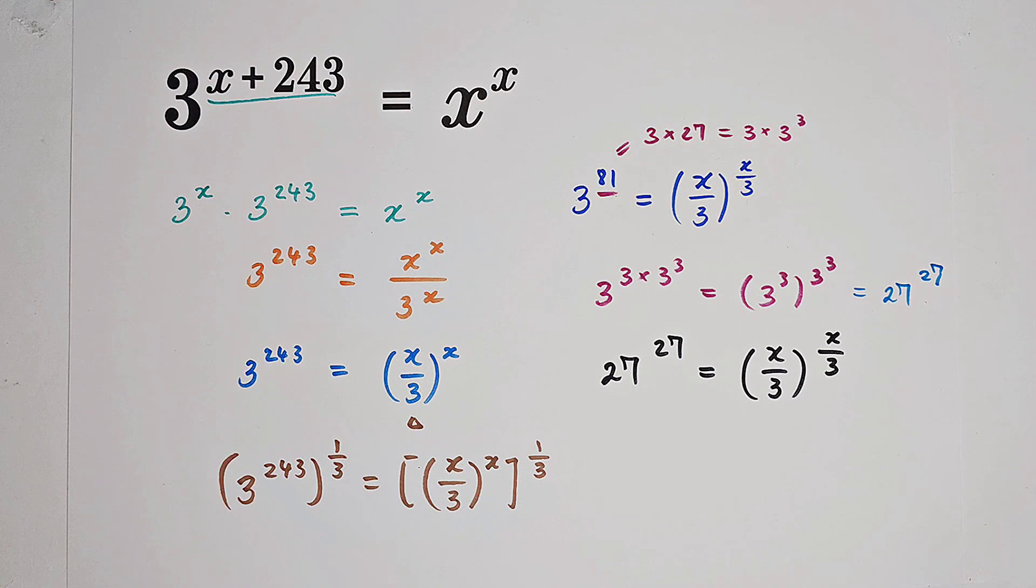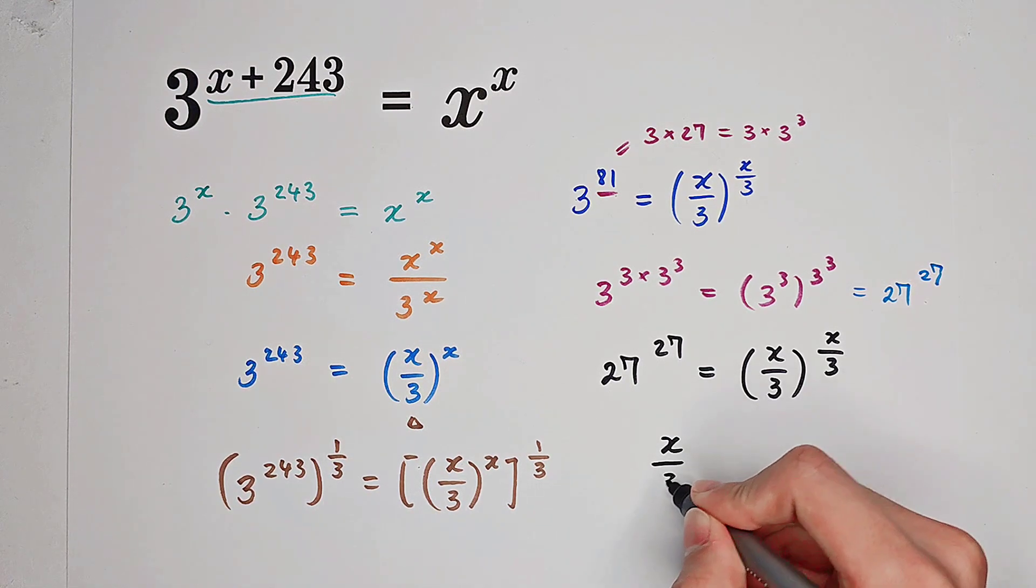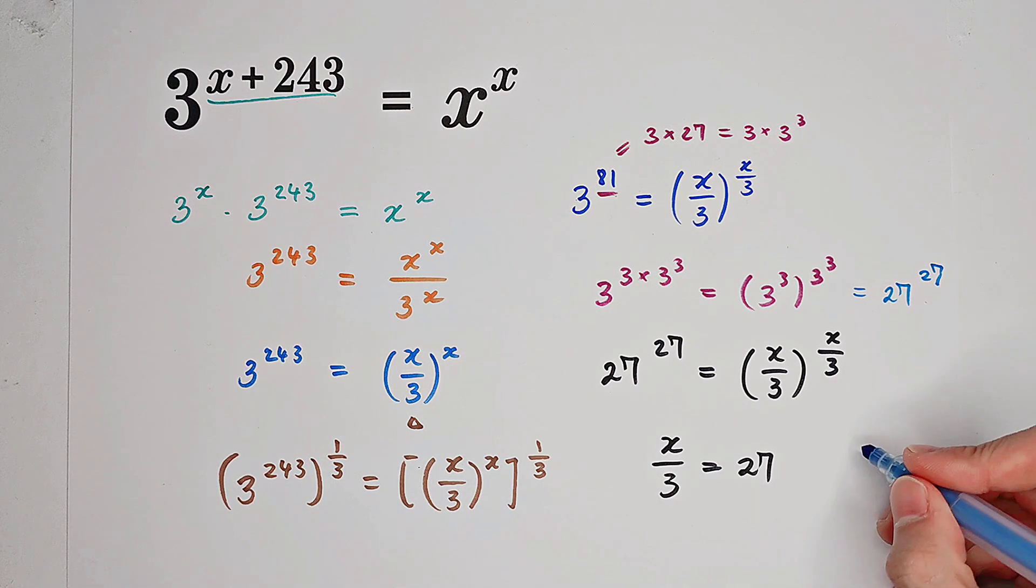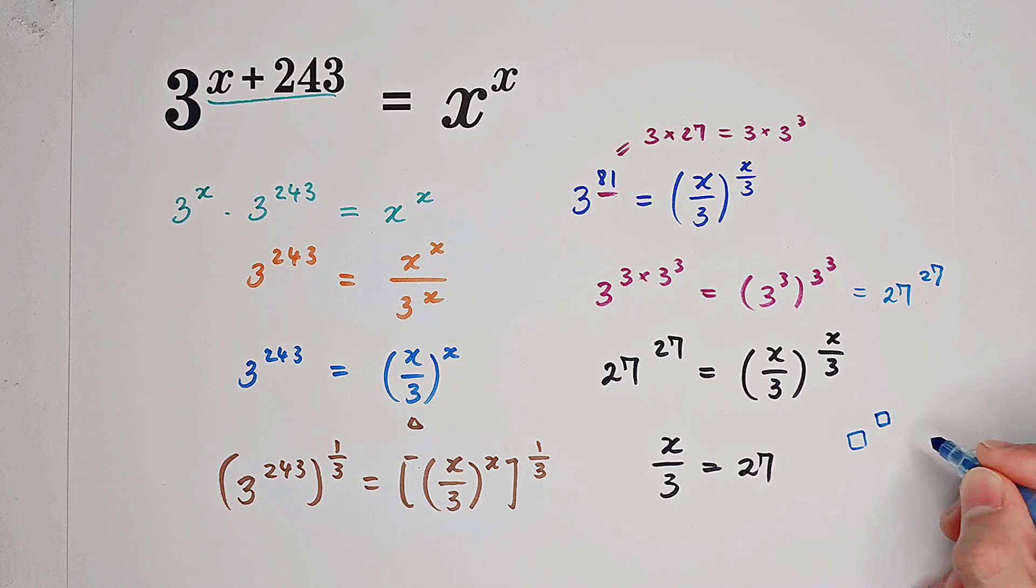Of course, we can then get x over 3 equals 27 because they have the same form—the left-hand side and the right-hand side. Something to the power of something equals something to the power of something. So, at last, we get x equals 81.